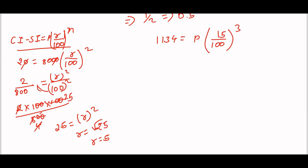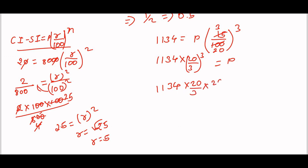So 1134 equals P into the expression. Expanding: 1134 into 20 divided by 3, into 20 divided by 3, into 20 divided by 3. Finishing this — going to the 3 times table, cancel 3 times. Balance equals 223, so 7, add 2, so 8.